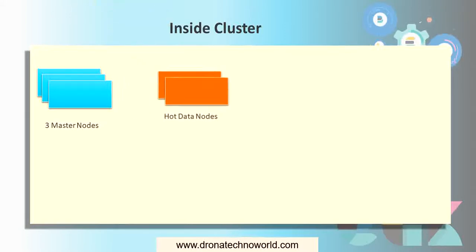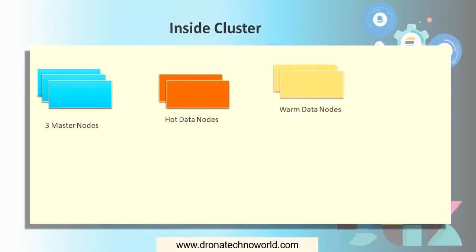Then we have the data nodes. There are two types of data node: one is the hot data node and the second is the warm data node. These are themselves a big concept which will be covered in a separate lecture, but here we just need to know that these two types of nodes are used for holding the index data and also for carrying out data-related operations such as searching and analyzing.